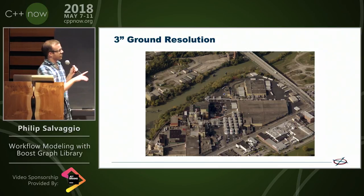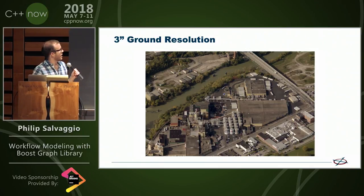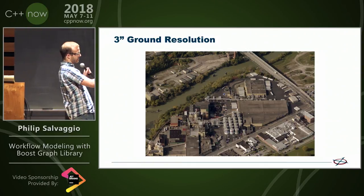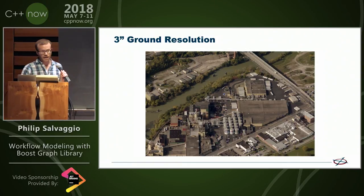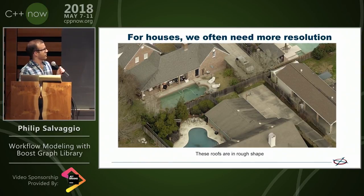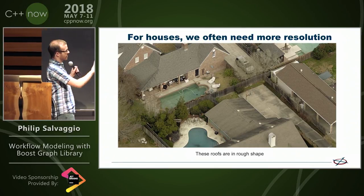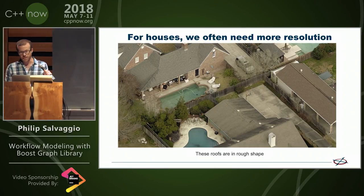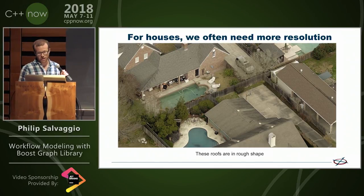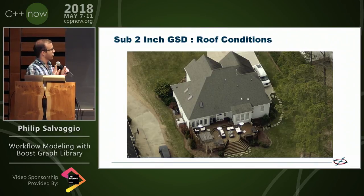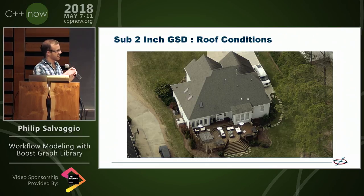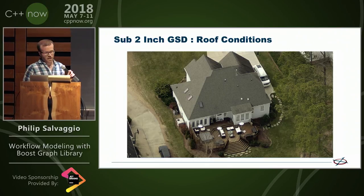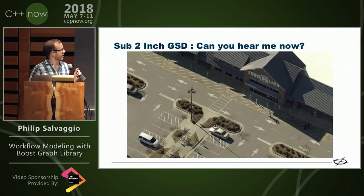This is a three-inch image from Eagle View, but oftentimes we care about houses more than we care about big buildings like breweries, so we actually go way further in than that. We take images that kind of look like this of houses, and these roofs are in pretty bad shape. We also take more sub-two-inch GSD images — ground sample distances, pixel size on the ground — so we take pictures like this and like this.